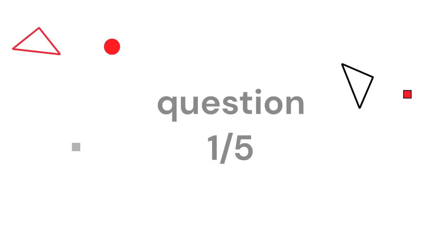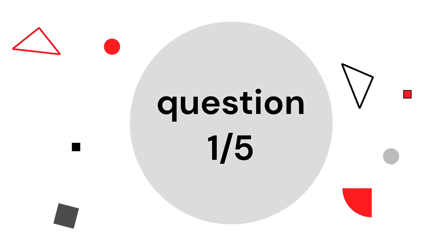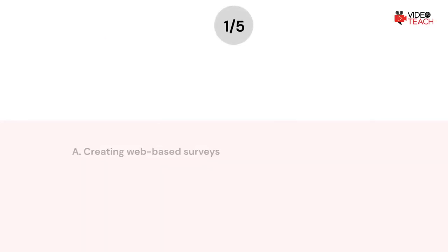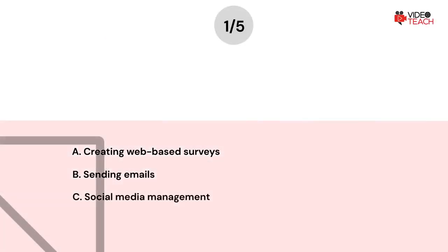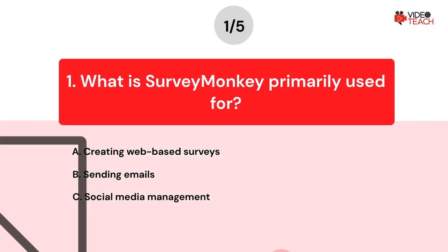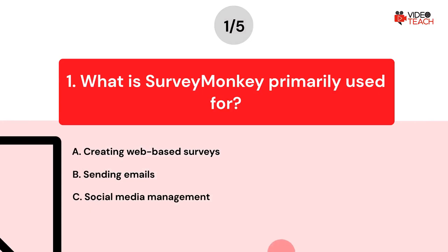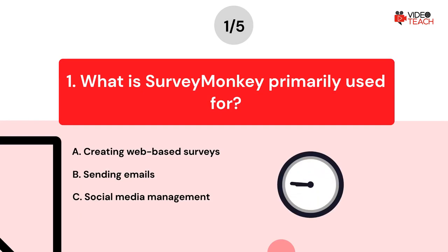Question number one. What is SurveyMonkey primarily used for? Option A: Creating web-based surveys. Option B: Sending emails. Option C: Social Media Management. Now you have about 15 seconds to think about your answer.